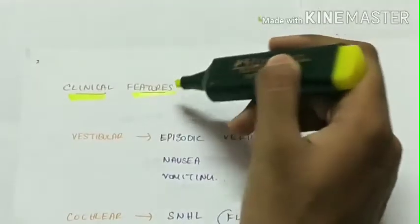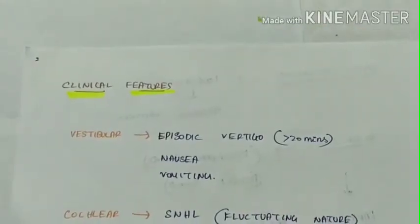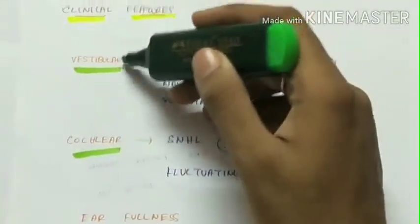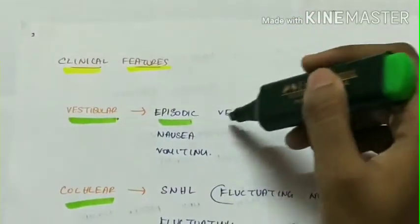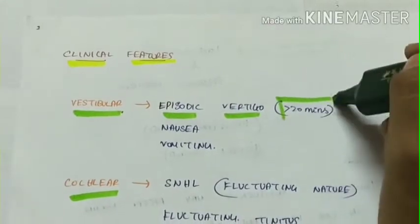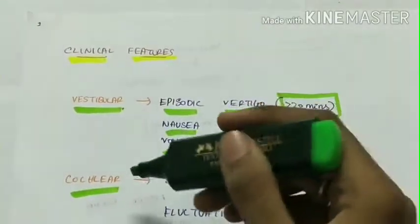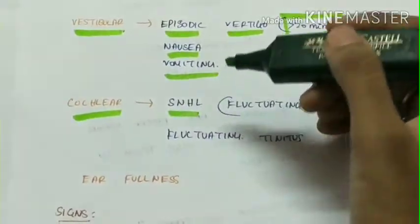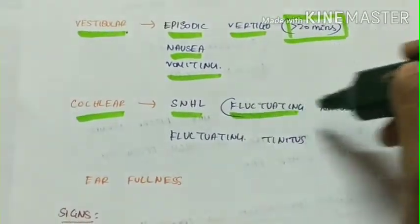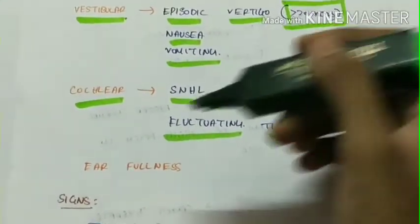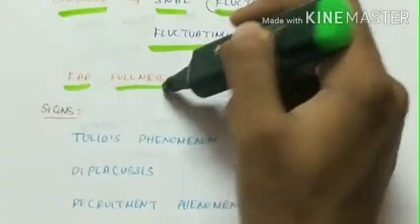Clinical features of Meniere's disease: as the inner ear is affected, there are both vestibular and cochlear symptoms. Vestibular symptoms are episodic vertigo which lasts for more than 20 minutes, nausea and vomiting. The cochlear symptoms are sensorineural hearing loss which is fluctuating in nature and fluctuating tinnitus. Another clinical feature is aural fullness.